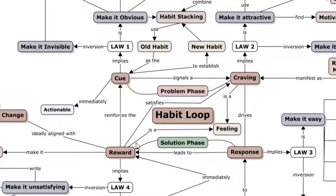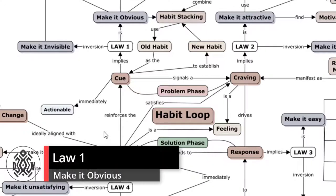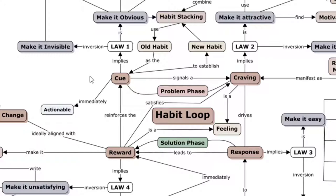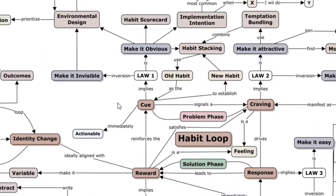A key thing to notice is that the reward and the craving are both feelings and sensations, which is a key theme in the book. Each of the four steps of the habit loop has a law - James Clear calls these the laws of behavior change. The first law is to make it obvious, and that goes with the cue. You want your trigger to be obvious and immediately actionable. If your phone vibrates but it's across the room and you're in a meeting, that's not immediately actionable, so you might stop at the craving phase and not complete the solution phase.